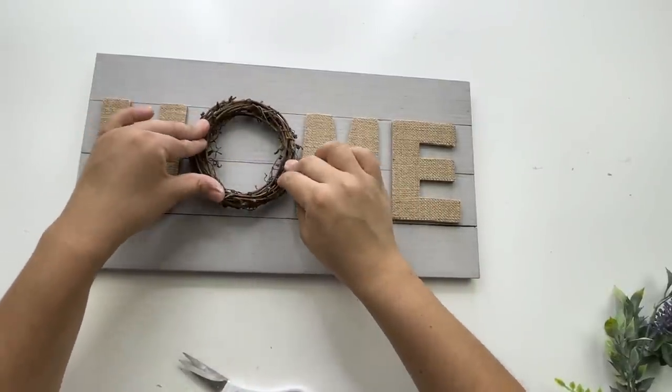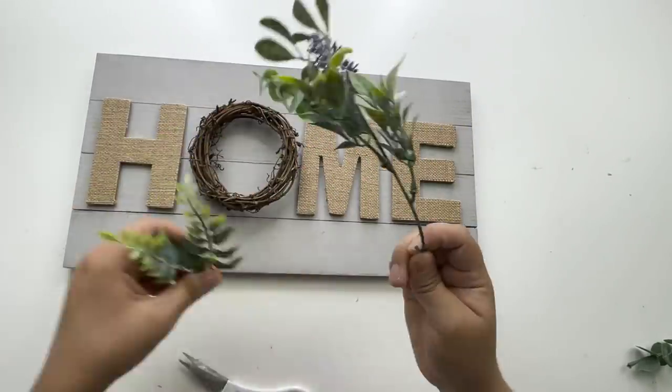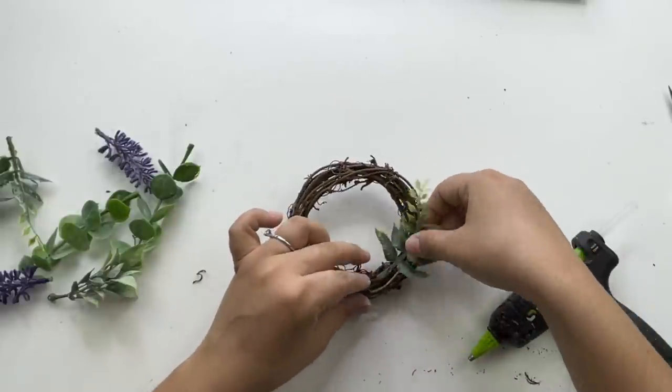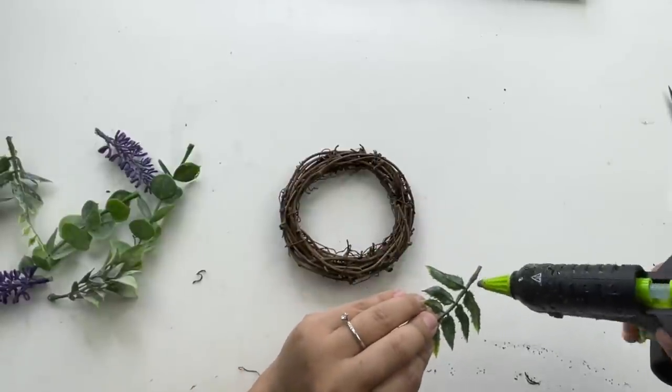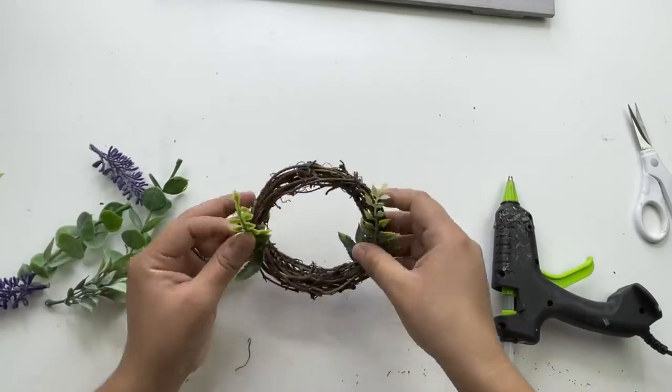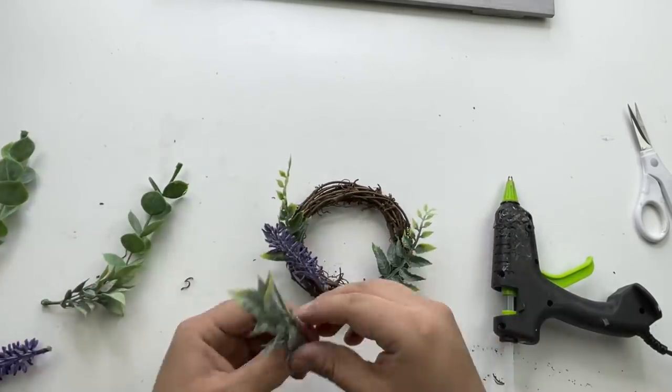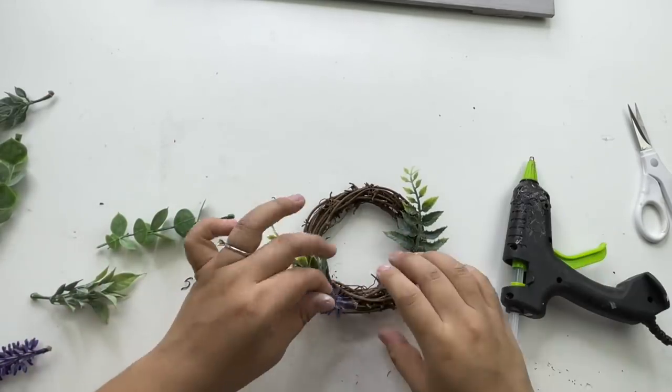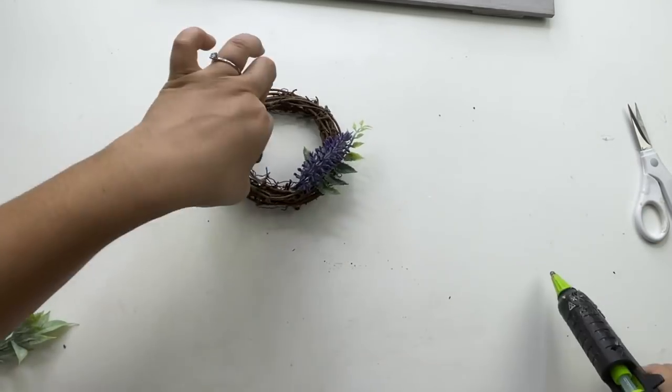Using this grapevine wreath that I got from Amazon. I'll have the link down in the description box in case you want to check those out. They were very inexpensive. Now I am going to use some of the same lavender greenery pick that I use in my other DIYs. I am not going to add all around the wreath. I'm going to just add some on one side and some on the other side, leaving a space in between so I can add a small bow.